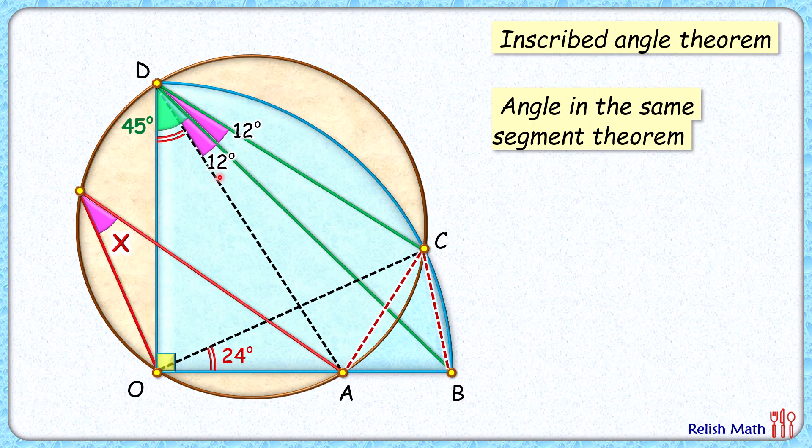Out of which this angle is 12, so this red angle—yes, that will be 33 degrees. Again, with respect to this brown circle, chord OA is extending an angle of 33 degrees at the circumference. And by angle in the same segment theorem, the value of angle X here, that will be the same, 33 degrees. And that's our answer.